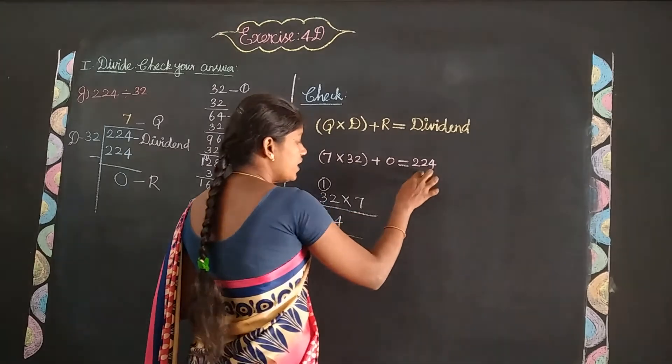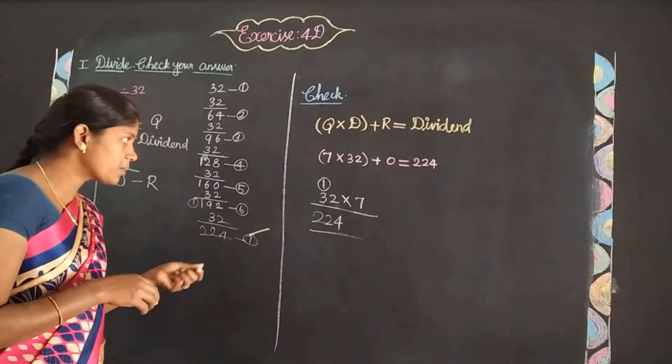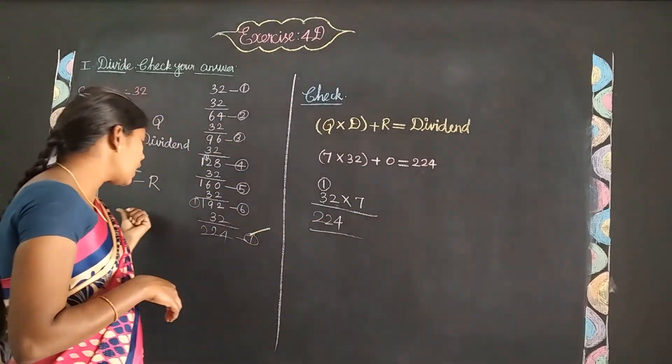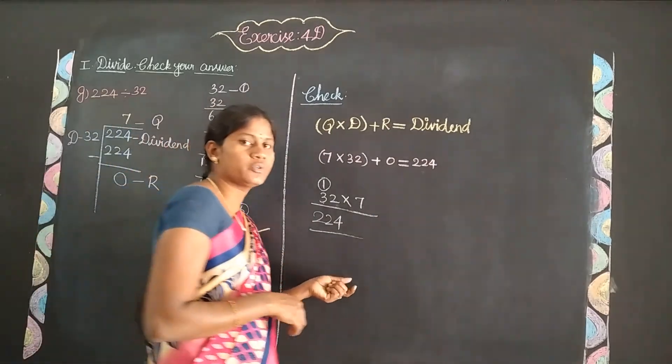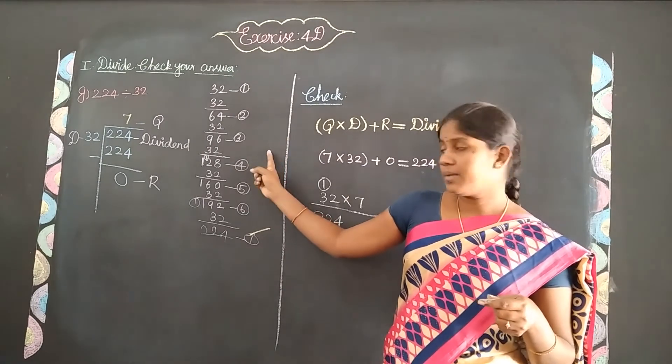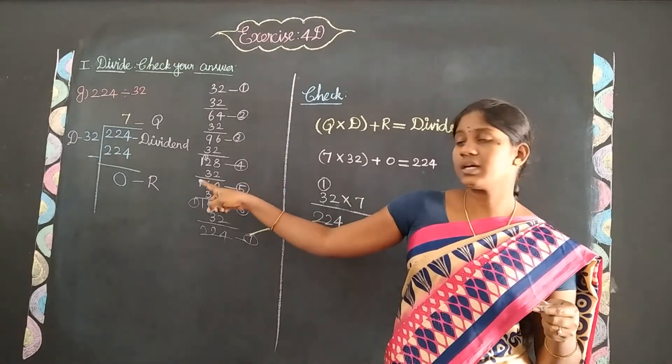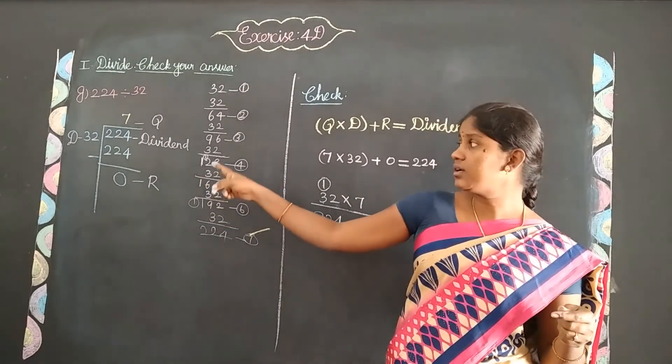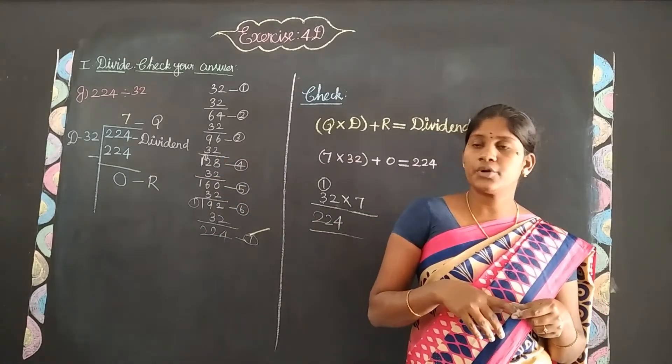224 is the dividend number. Because remainder is 0, adding 0 gives the same answer. So we've checked that our division is correct. First write the multiplication table, find the quotient and remainder, then check using the formula: quotient times divisor plus remainder equals dividend.